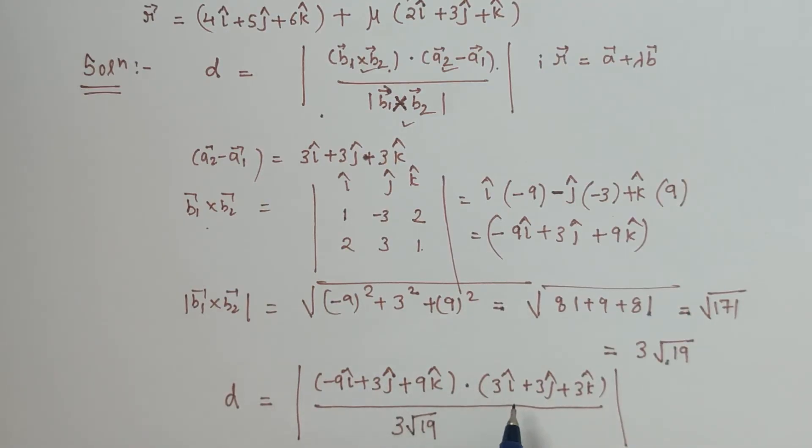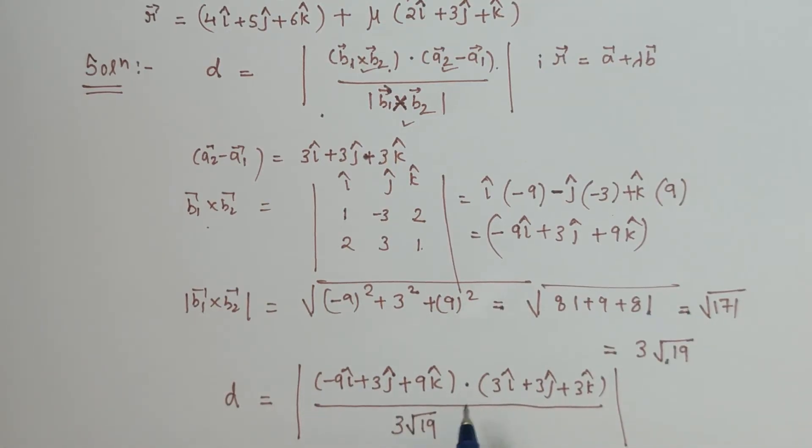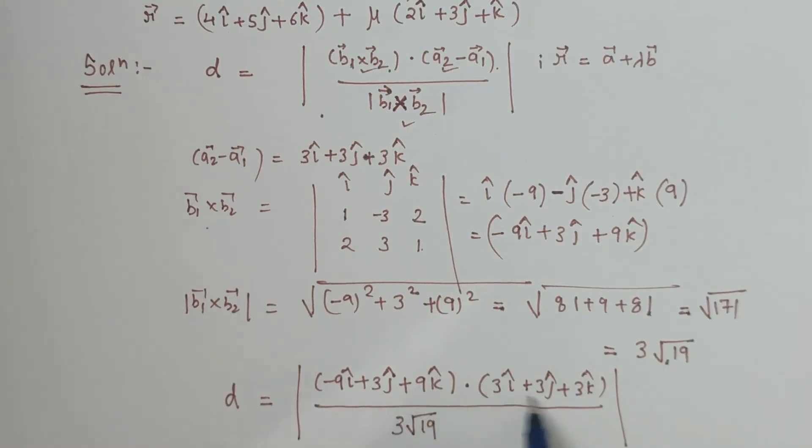Now as we know, dot of any two vectors is a single scalar value. So let us find its dot product. Only i dot i will exist and i dot with any other vector will become 0. So minus 9 into 3 is minus 27.